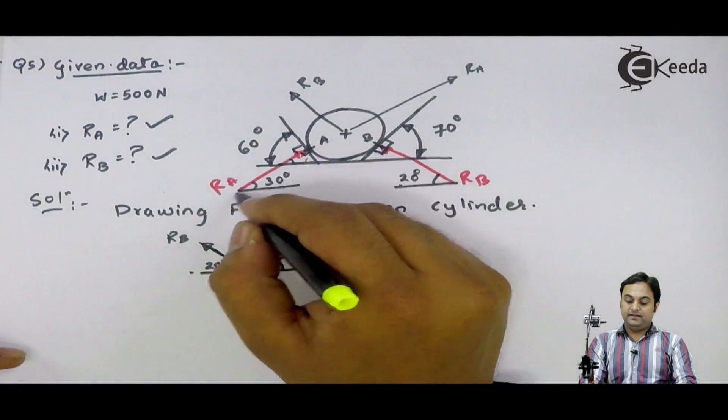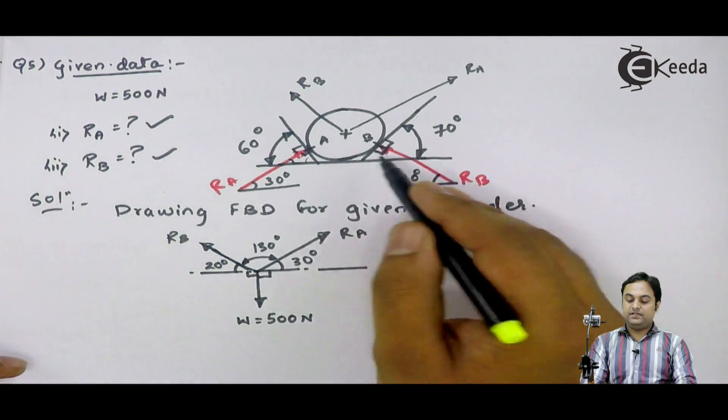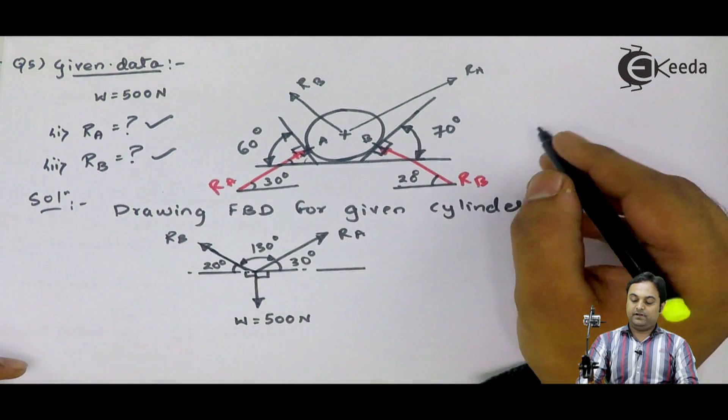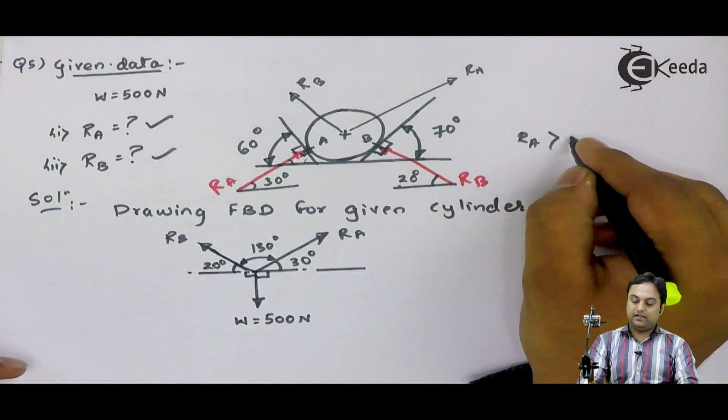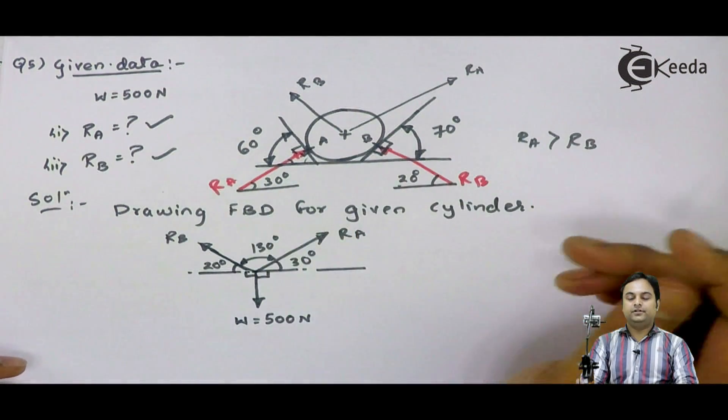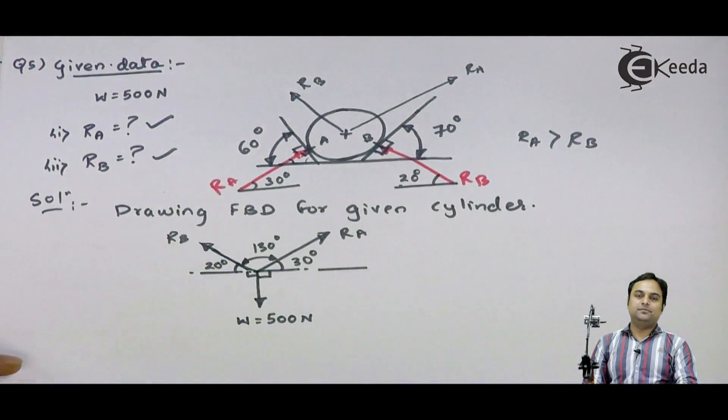It means the reaction at 60 degree inclined plane is more as compared to the reaction at 70 degree inclined plane. It means RA is greater than RB offering more reaction to this cylinder of weight 500 Newton. With this the problem is completed.